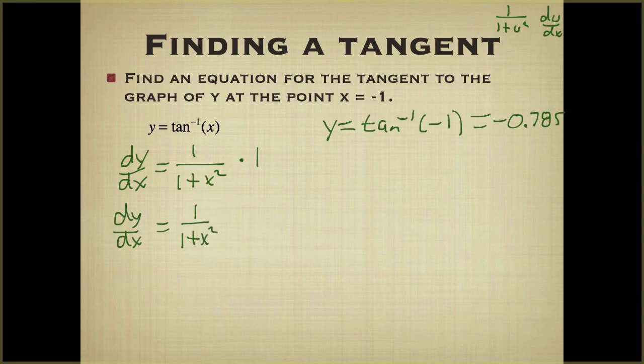And we want to find out what's going on at negative 1. We're going to find out the slope at negative 1, which is 1 over 1 plus negative 1 squared. Negative 1 squared is 1. So we have 1 over 1 plus 1, which is 1 half. We now have our slope.